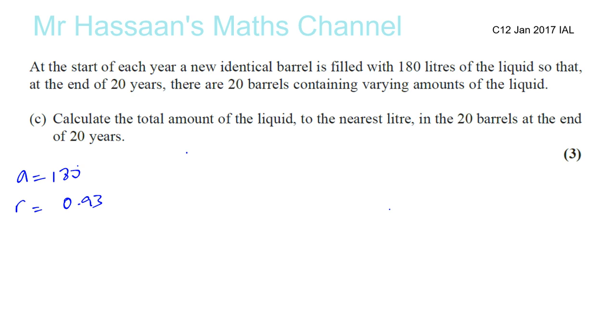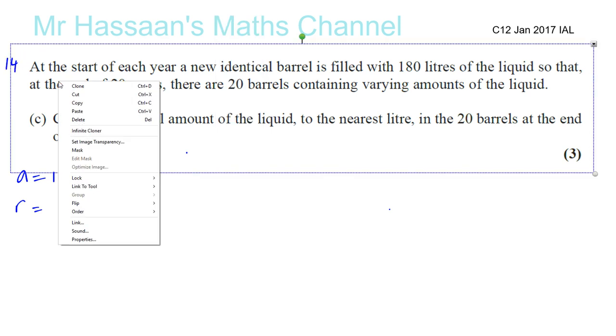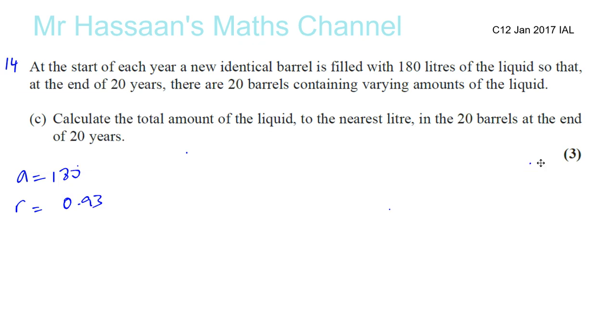Okay, so now moving on to 14 part C, where we have this geometric series question. It says at the start of each year, a new identical barrel is filled with 180 litres of the liquid, so that at the end of 20 years, there are 20 barrels containing varying amounts of the liquid. Calculate the total amount of liquid to the nearest litre in the 20 barrels at the end of the 20 years.